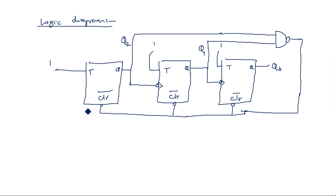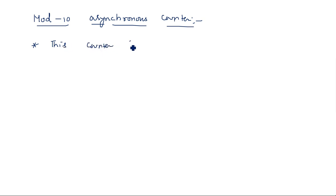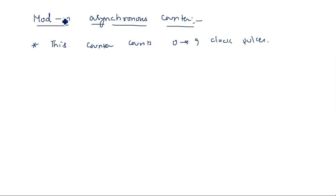Now coming to the mod 10 asynchronous counter. This is also similar, but instead of 3 flip-flops we need 4 flip-flops, because mod 10 means this counter counts 0 to 9 clock pulses. In general, mod N means counting from 0 to N minus 1. Whenever the Nth clock pulse occurs, the count resets. So mod 10 counts 0 to 9, which is a total of 10 clock pulses.